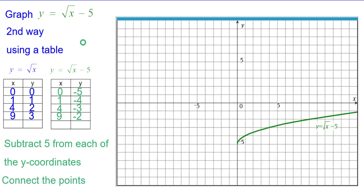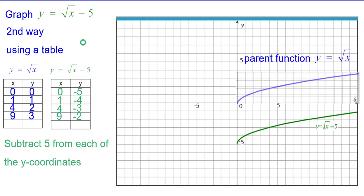Connect the points and again we get that same curve. Comparing it to the parent function, the curve is down 5 units, matching perfectly.